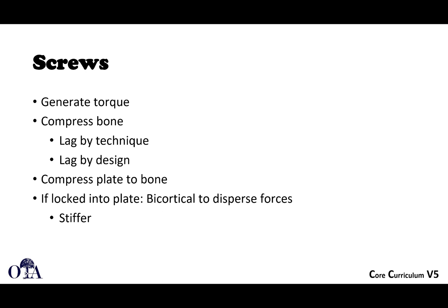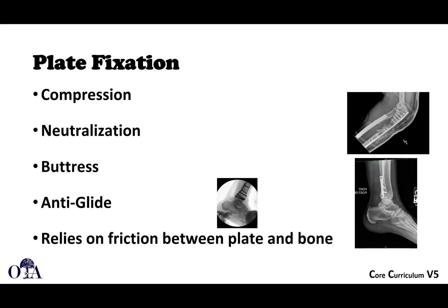Screws generate torque and can compress bone when used as lag screws — either by design or by technique. By design, the screw may be partially threaded to allow compression. By technique, you overdrill a gliding hole to create the opportunity for compression. Screws also help compress a plate to bone when using non-locked screws, and when screws are locked into a plate, they can span cortical bone to disperse forces and create a very stiff construct.